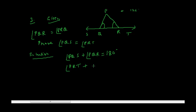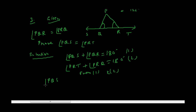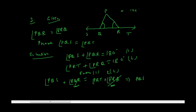Similarly, angle PRT plus angle PRQ equals 180 degrees. Calling these equation 1 and equation 2, from equations 1 and 2: angle PQS plus angle PQR equals angle PRT plus angle PRQ. Since angle PQR equals angle PRQ, these cancel, giving us angle PQS equals angle PRT, which is what we were supposed to prove.